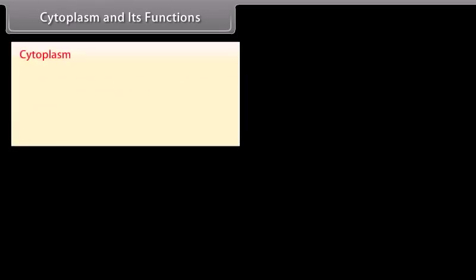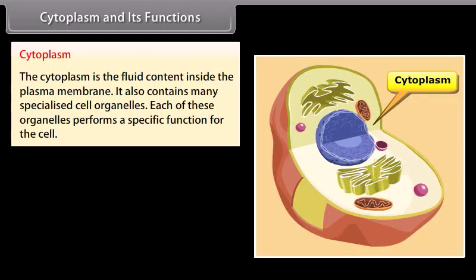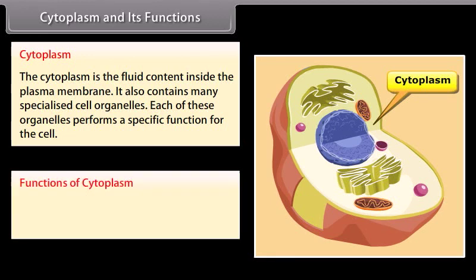The cytoplasm is the fluid content inside the plasma membrane. It also contains many specialized cell organelles, each of which performs a specific function for the cell. All cell organelles are embedded in the cytoplasm.